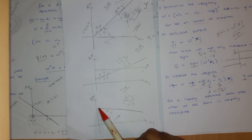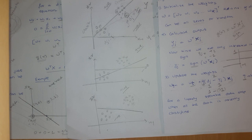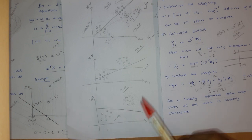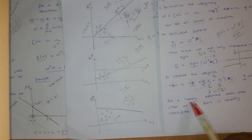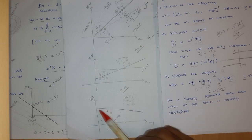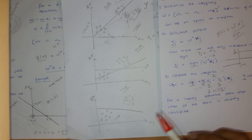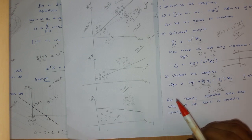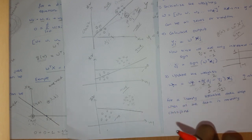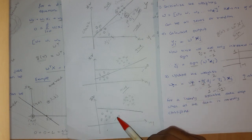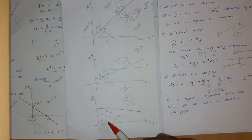One can ask: how can we be so sure that we will always get a separating line for any linearly separable data? This is what we will see in the next video — why the perceptron rule always converges for any linearly separable data.